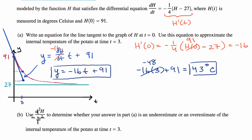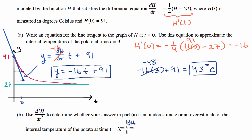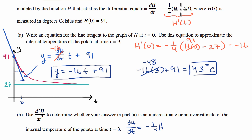So first, let's find the second derivative. We have the first derivative written up here — let me just rewrite it and distribute the negative one-fourth, because it'll be a little more straightforward. So the derivative of H with respect to time equals negative one-fourth times our internal temperature, which is itself a function of time, and then negative one-fourth times negative 27 gives us plus 27 over four.